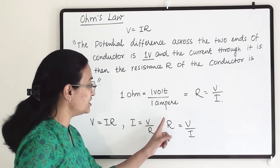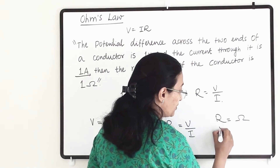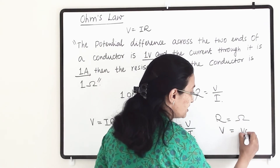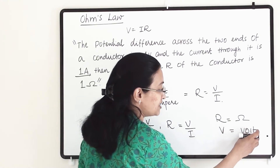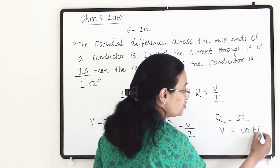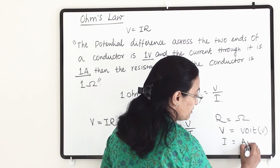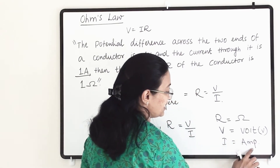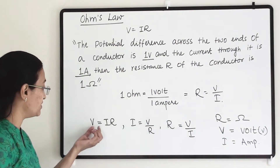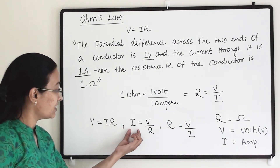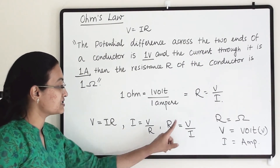The units are: R is measured in ohms, potential difference V is measured in volts, and current I is measured in amperes. These are the three different formulas — V equals IR, I equals V/R, and R equals V/I — by which we can find voltage, current, or resistance when we have the other two quantities.